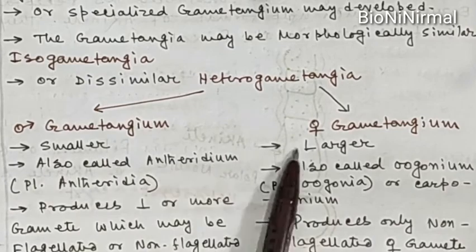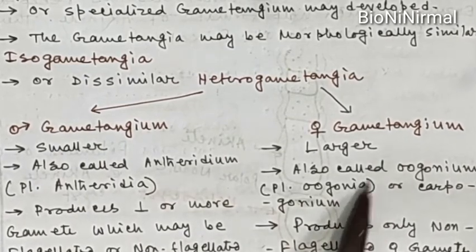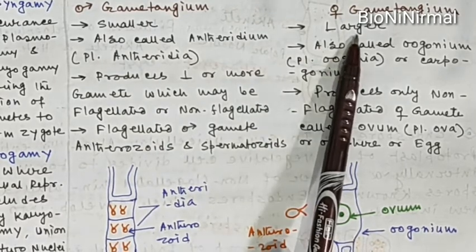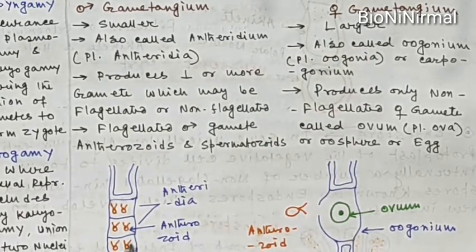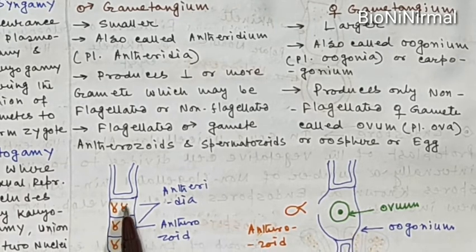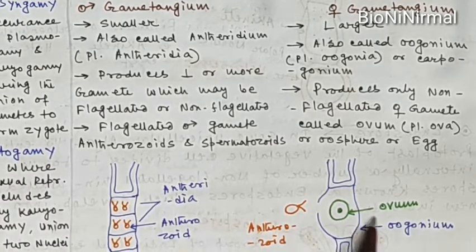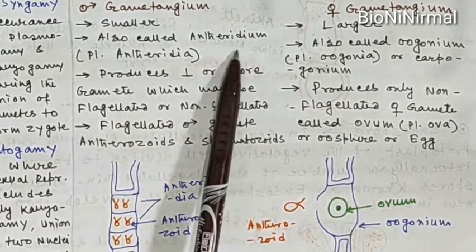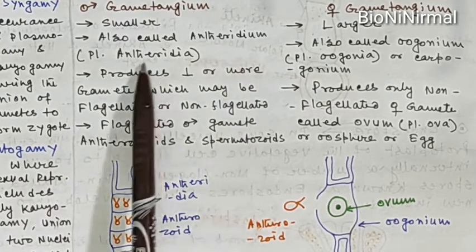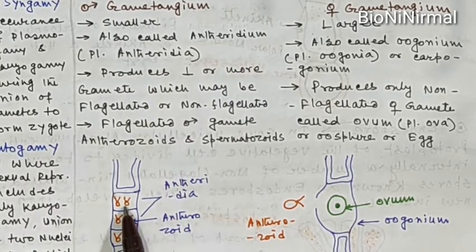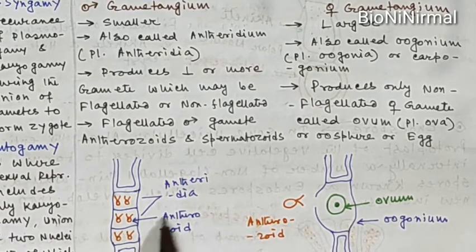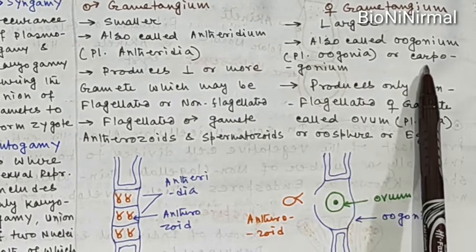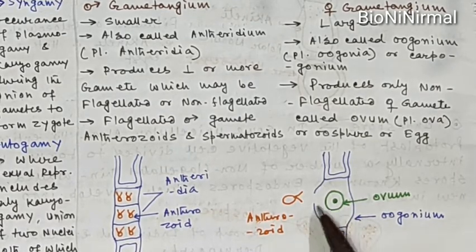Heterogametangia can be divided into two broad parts: the male gametangium, which is usually smaller, and the female gametangium, which is usually larger. The male gametangium is also called the antheridium (plural: antheridia), and the female gametangium is called the oogonium (plural: oogonia) or carpogonium.